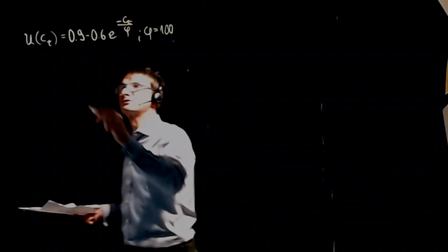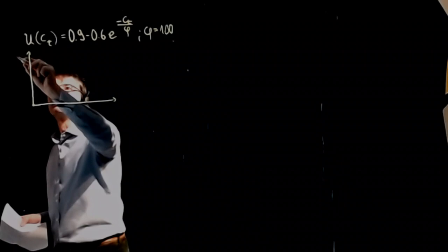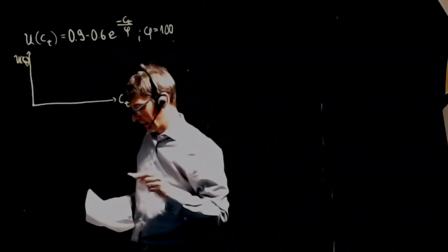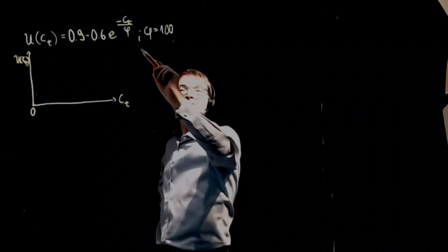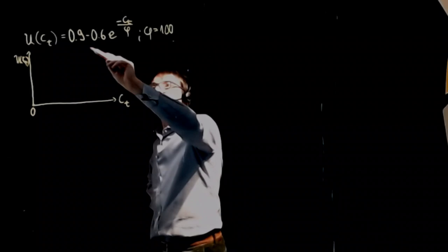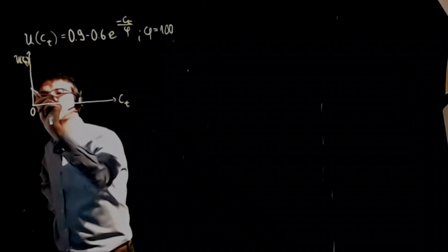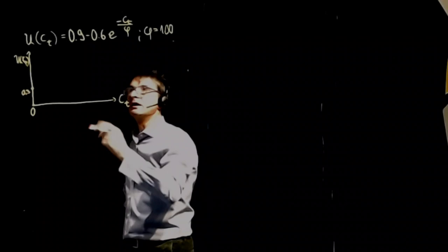Now this utility function has an attractive shape. And this shape can be denoted here in a diagram, putting the utility here on the y-axis and plotting consumption here. Now assume for a moment that consumption would be zero. In such a case we have the exponent being zero, e to the power of zero is one, such that we subtract 0.6 from 0.9 and end up with a value of 0.3. And this utility function will be upward sloping. Utility will increase with consumption.